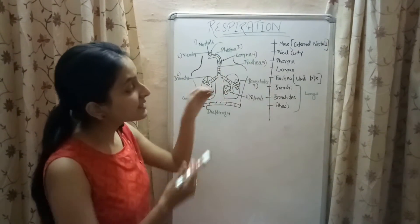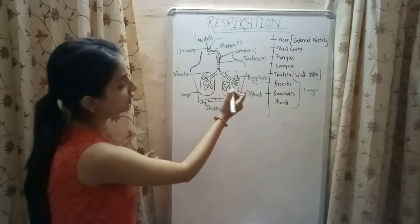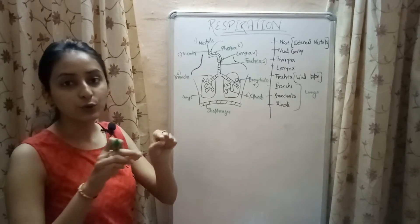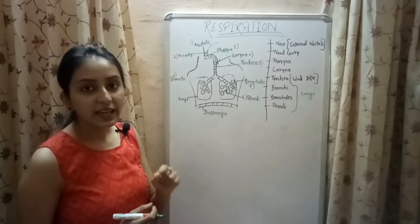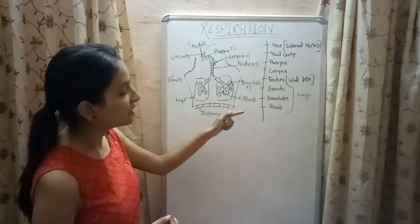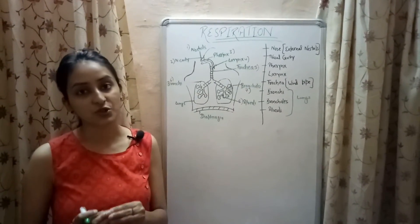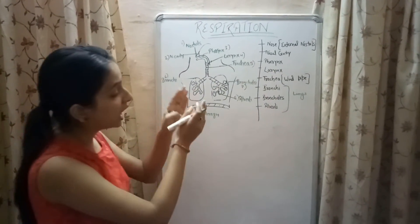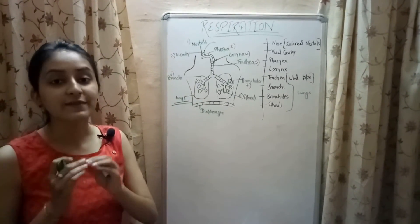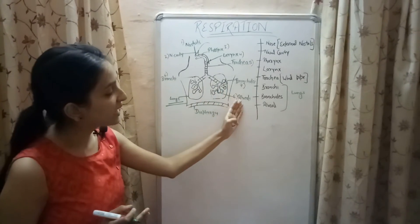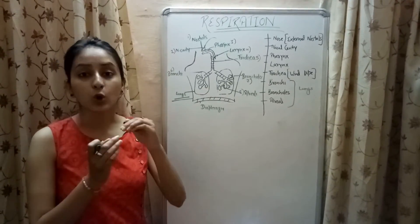After the pharynx, air enters the voice box known as the larynx. After the larynx, oxygen reaches the windpipe called the trachea, which divides into branches known as bronchi. These bronchi further divide into branches called bronchioles, and the bronchioles contain bag-like structures known as alveoli. The air taken in through the nostrils finally reaches the alveoli, where the actual exchange of gases between carbon dioxide and oxygen takes place. Bronchi, bronchioles, and alveoli are present in sac-like structures known as lungs.